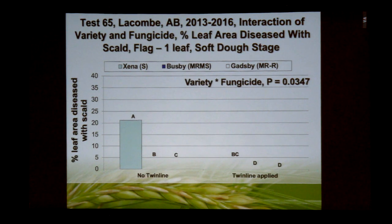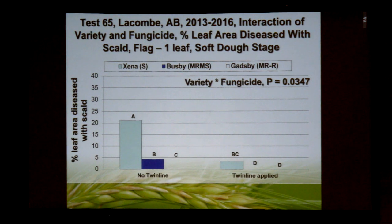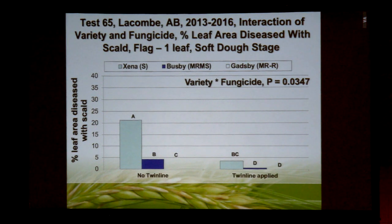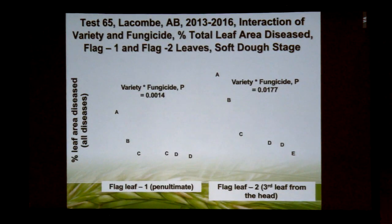Looking at combined data from Lacombe over 2013 to 2016, we saw a significant interaction between variety and fungicide in terms of leaf disease on the penultimate leaf. With the susceptible variety we saw a substantial reduction in leaf disease by applying the flag leaf emergence fungicide Twinline. Looking at Busbee, an intermediate level of scald resistance, that genetic package provided a significant level of control; we saw somewhat of a reduction in disease where we applied fungicide to Busbee. Gatsby, with an even better resistance package, had much lower levels of disease with only a fairly small additional response to fungicide.